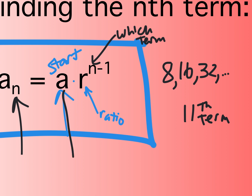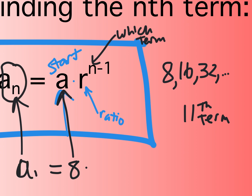Mariam, what do you say the A is for this problem? A sub 11 — the 11th term is what I want. Eight times R, which is 2, to the N minus 1, so I put 11 minus 1 equals 10 there. Now 2 to the 10th is: 2, 4, 8, 16, 32, 64, 128, 256, 512 — double 512 is 1024. So the 11th term is 8 times 1024.